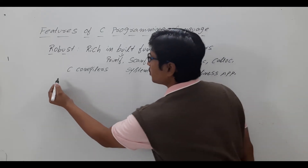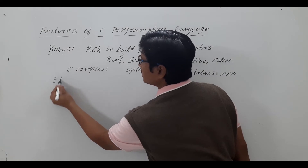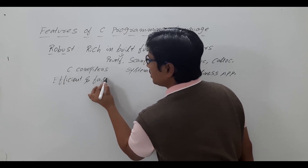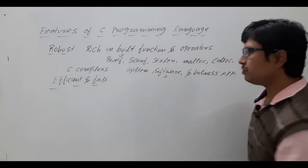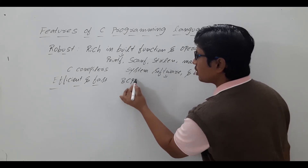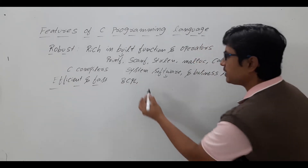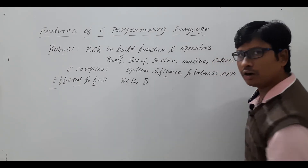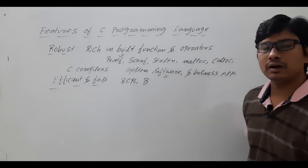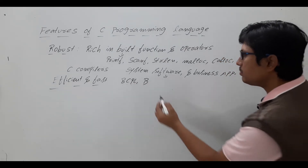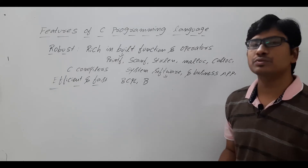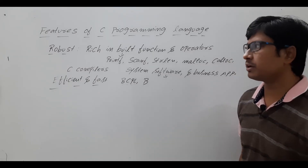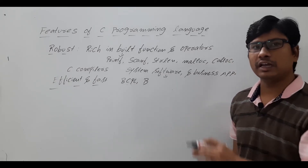C program is also efficient and fast. As discussed in the last video, before C we had two programming languages: BCPL (Basic Combined Programming Language) and B. Compared to BCPL and B, C programming language was faster and more efficient. Those two languages are typeless whereas C is type-oriented.